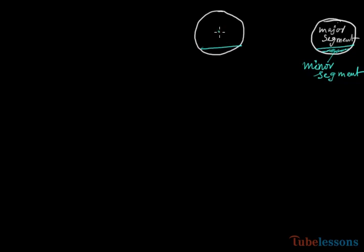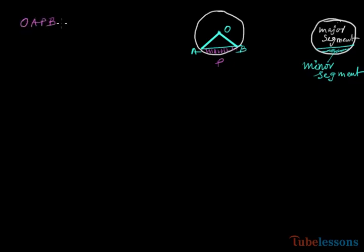Taking the center, we will join it and name it. The center is O, and the chord endpoints are A and B. So O, A, P, B is our area of the sector.